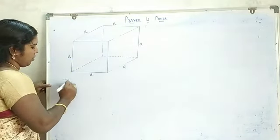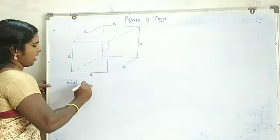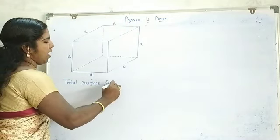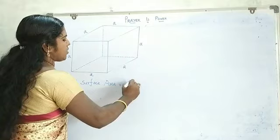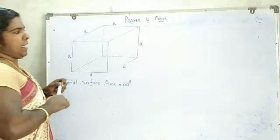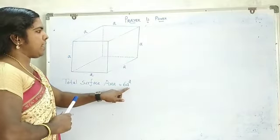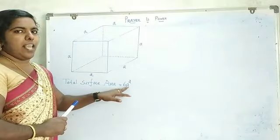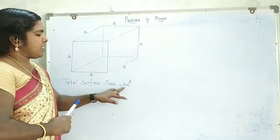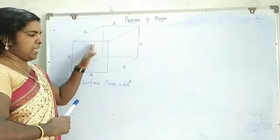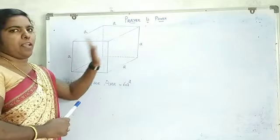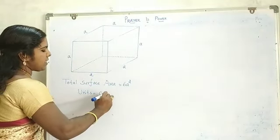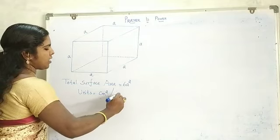The total surface area is equal to 6a². A cube has 6 faces, so we use 6. 'A' means the length of your side. The units are centimetre square or metre square.